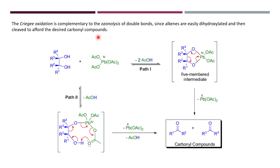There are two proposed pathways for this reaction. In pathway 1, a five-membered cyclic intermediate forms, very similar to the periodic acid mechanism seen in the Malaprade oxidation reaction. The bond cleaves, leading to formation of a double bond, and this reduces lead(IV) to lead(II), giving the carbonyl compounds. In pathway 2, one of the OH groups removes an acetate, and via a transition state where the bond breaks, the carbonyl compounds are again formed.